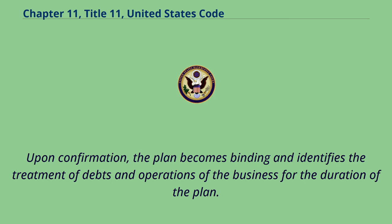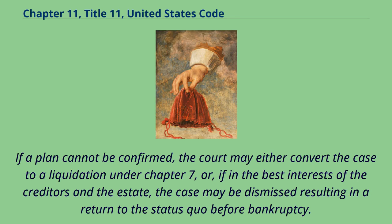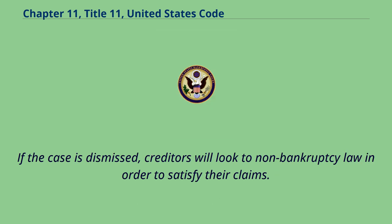Upon confirmation, the plan becomes binding and identifies the treatment of debts and operations of the business for the duration of the plan. If a plan cannot be confirmed, the court may either convert the case to a liquidation under Chapter 7, or, if in the best interests of the creditors and the estate, the case may be dismissed resulting in a return to the status quo before bankruptcy. If the case is dismissed, creditors will look to non-bankruptcy law in order to satisfy their claims.